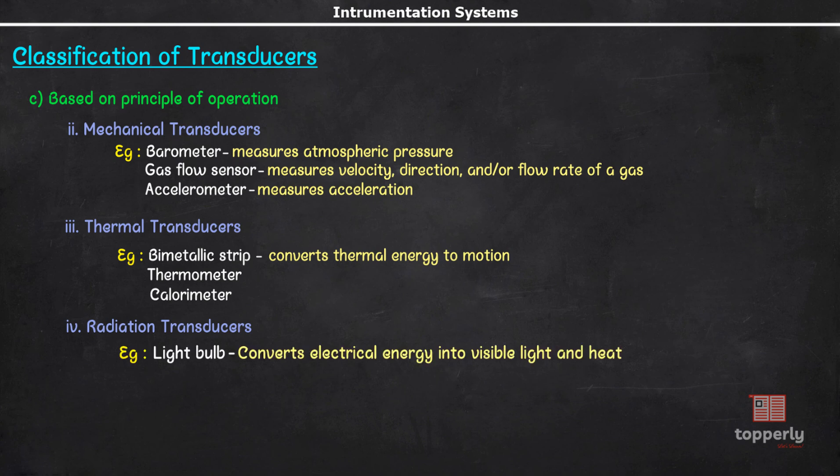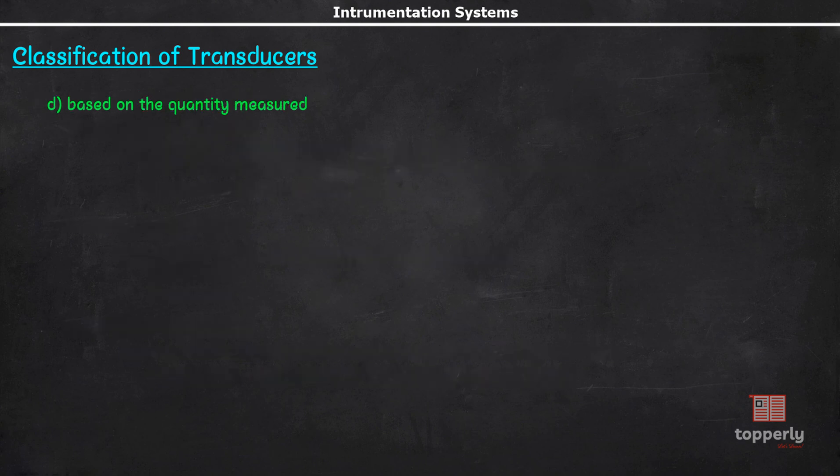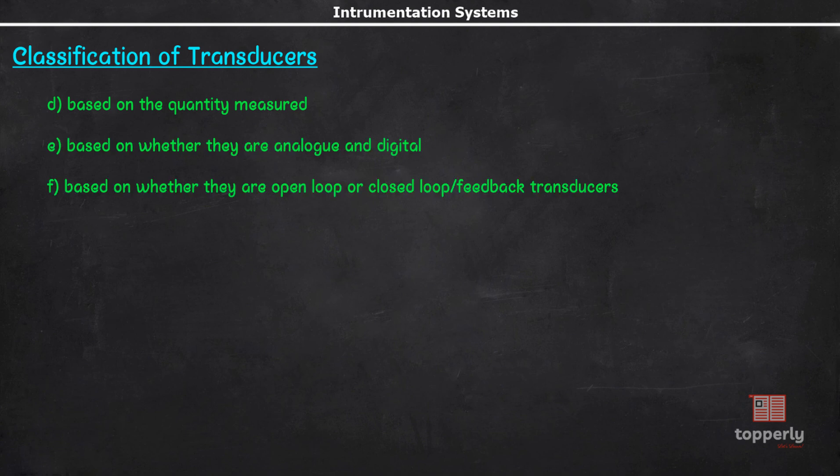Another class of transducers based on the principle of operation is the radiation type which includes the photoelectric transducers. Examples are light bulb, photodiode, etc. Again, some other ways to classify transducers are based on the quantity they measure, whether they are analog or digital, or whether they are open loop or closed loop feedback transducers, etc. Since these classifications are self-explanatory, I am not discussing it further.